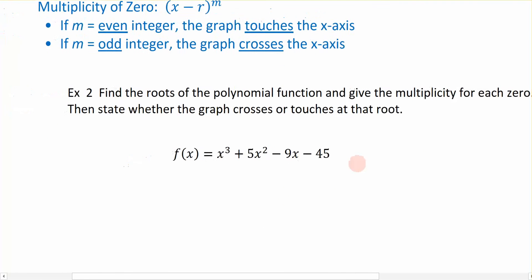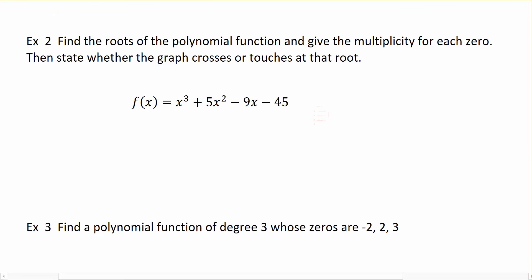So we are given, in this first example right here, the function with these four terms for the function. And what I want to do is I want to find out what the multiplicity is for each of the zeros, and then I want to determine whether it crosses or touches. So how do I start? In order to find out what the zero is for the function, again, that's the real zero, we have to solve this function. Now how do I solve a function that has four terms?